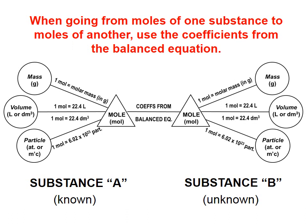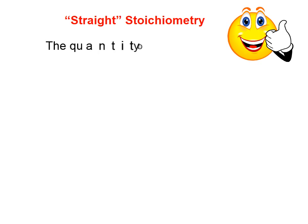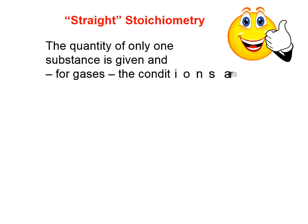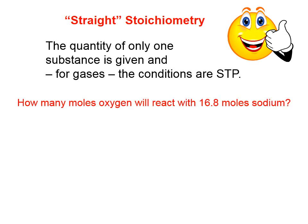Now we're going to convert between amounts of two substances. One substance amount is given, and we're asked to calculate another amount. To do that, we need to start on the left side of the diagram — that's substance A, the known substance — and substance B is the amount we're asked to calculate. To get from one side to the other, we have to use the coefficients from the balanced equation. This is what I call straight stoichiometry, where the quantity of only one substance is given, and if we have any gases, the conditions are standard temperature and pressure.